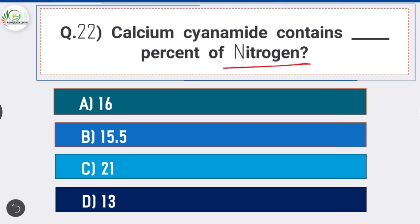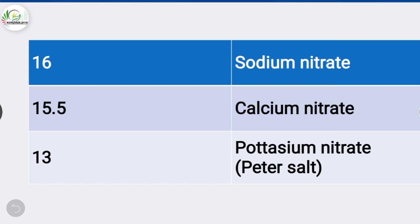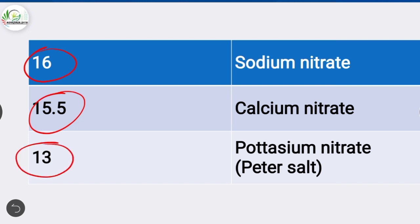Question number 22: Calcium cyanamide contains what percentage of nitrogen? Calcium cyanamide contains 15.5% of nitrogen, and potassium nitrate contains 13% of nitrogen.